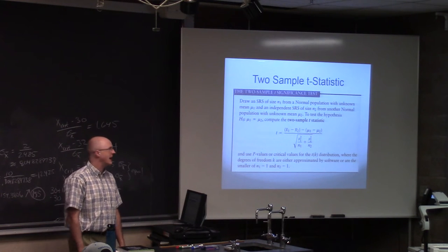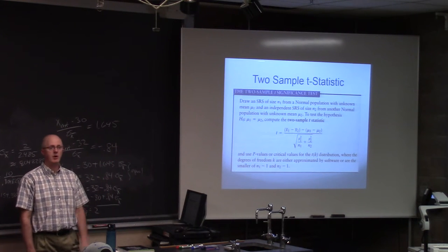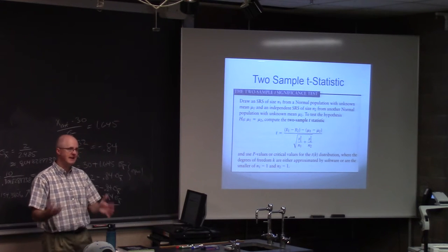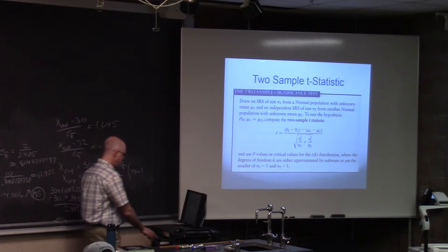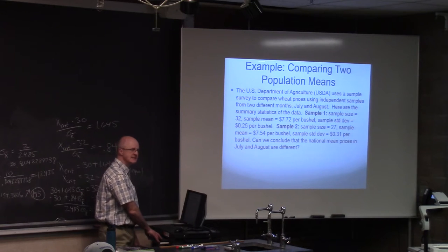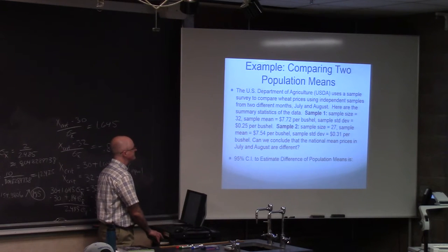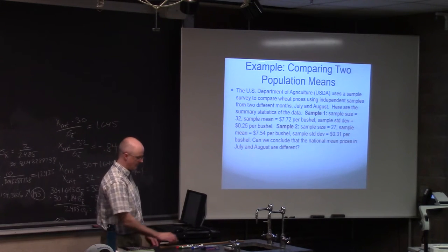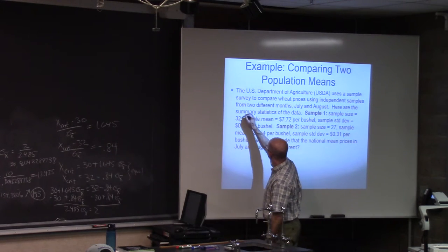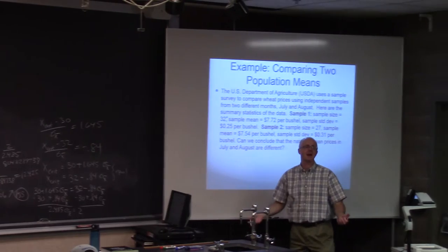Let's start the second half of class by quickly going over the example from the end of the previous lecture, where we were looking at comparing two population means that have to do with prices of wheat per bushel. Remind you of what went on here. There were two different samples, and they were assumed to be independent of each other.